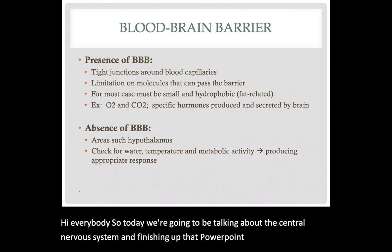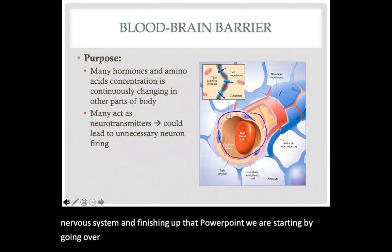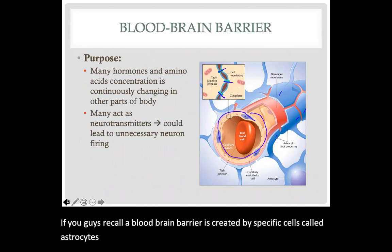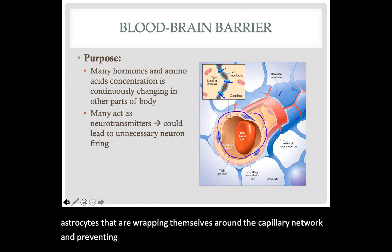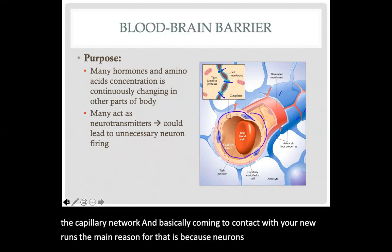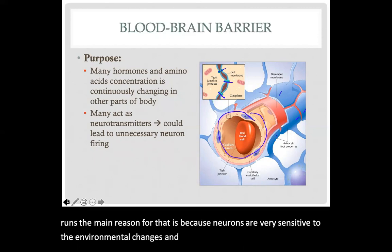We are starting by going over the concept of the blood-brain barrier. The blood-brain barrier is created by specific cells called astrocytes that wrap themselves around the capillary network, preventing many components present in blood from exiting the capillary network and coming into contact with your neurons. The main reason for that is because neurons are very sensitive to environmental changes and can be influenced as a result.